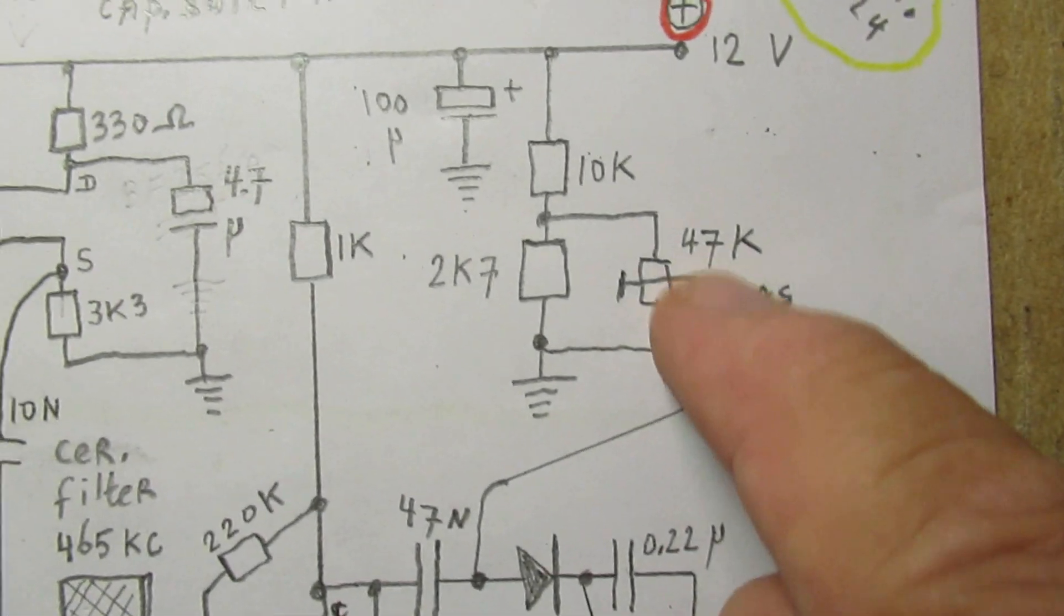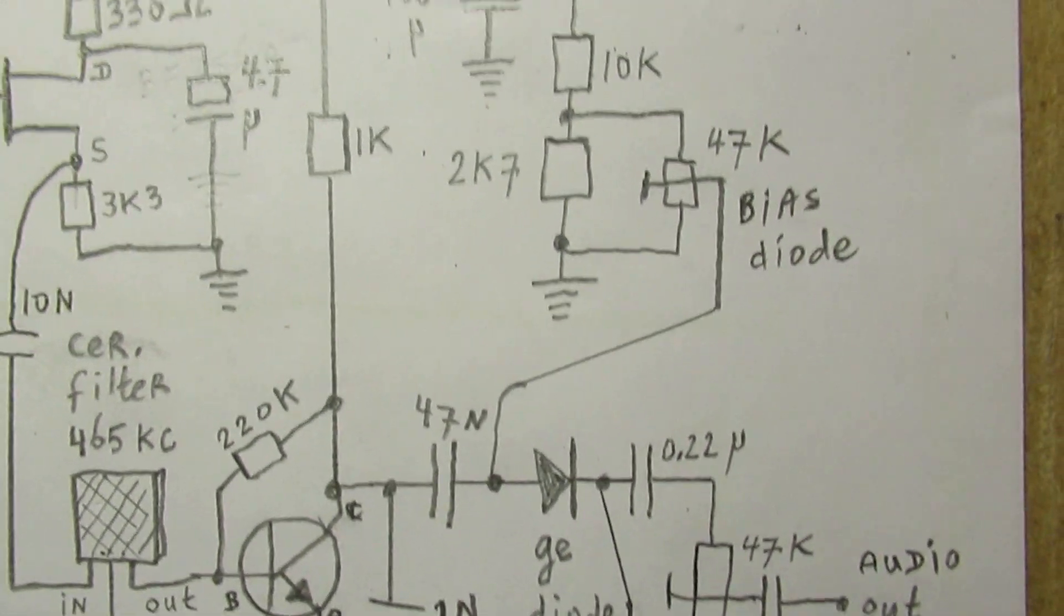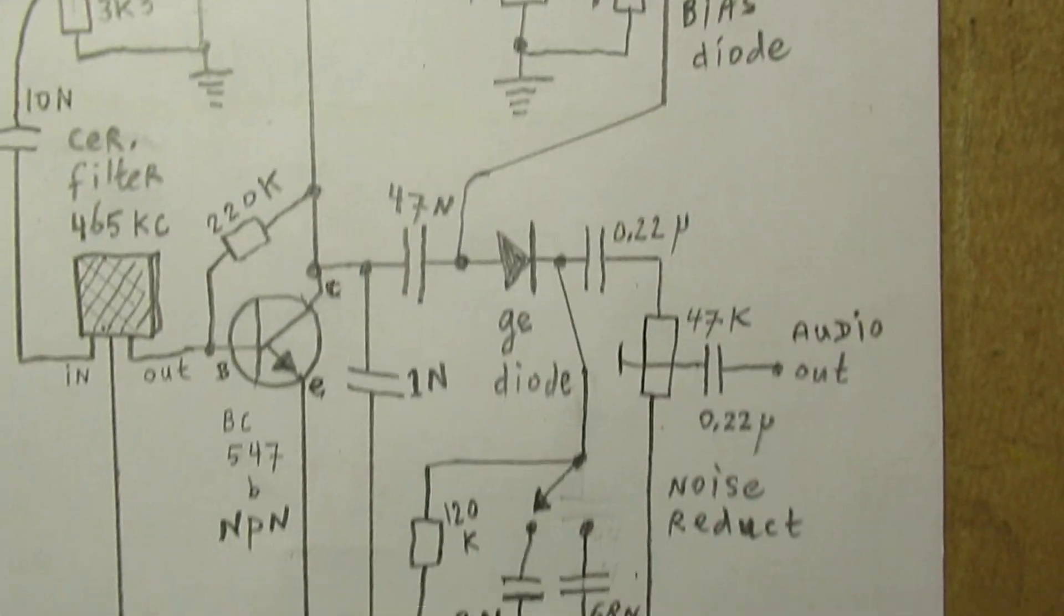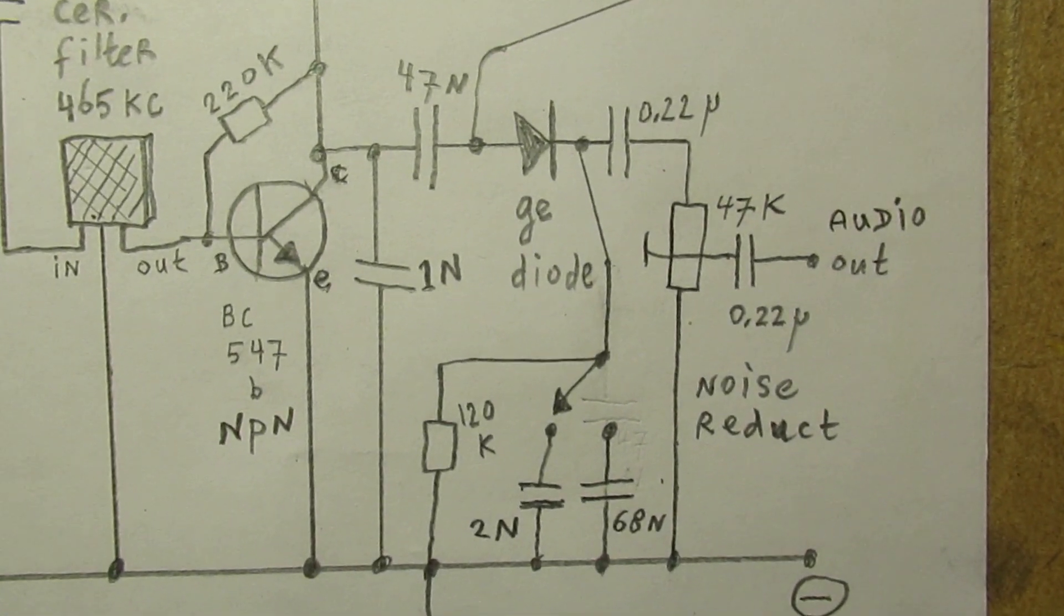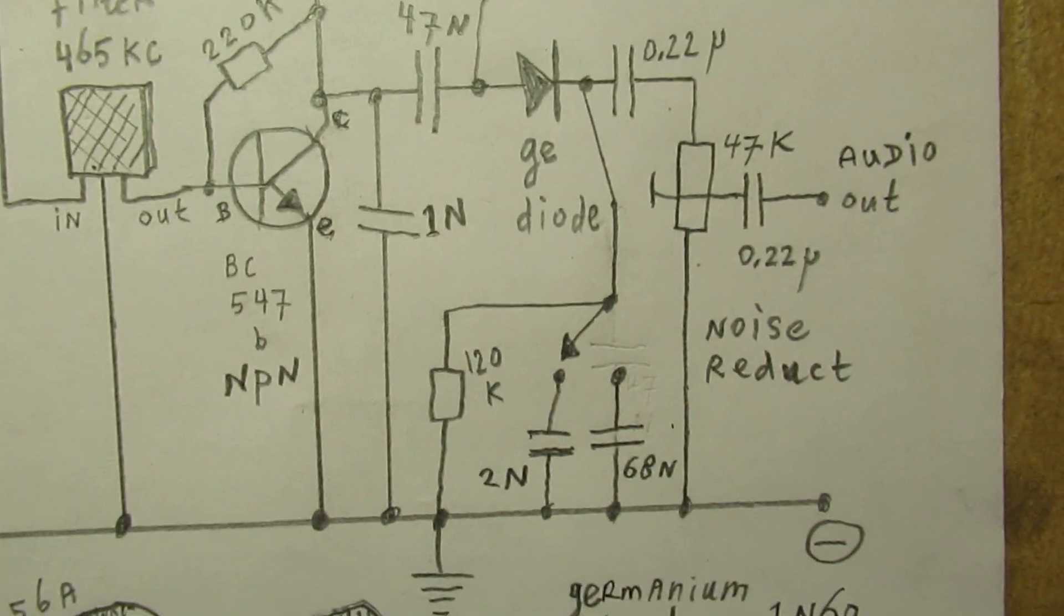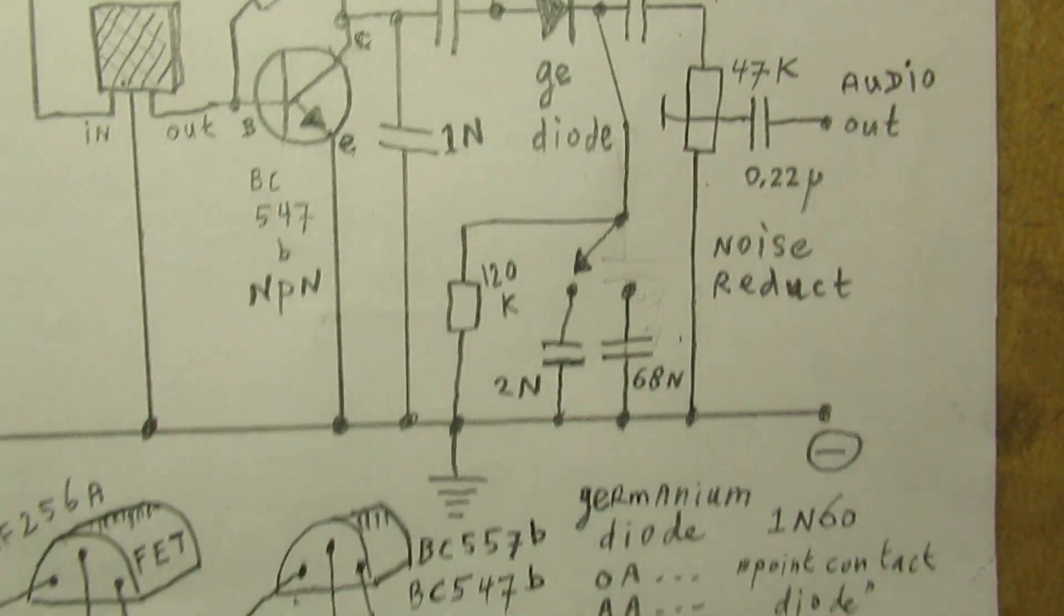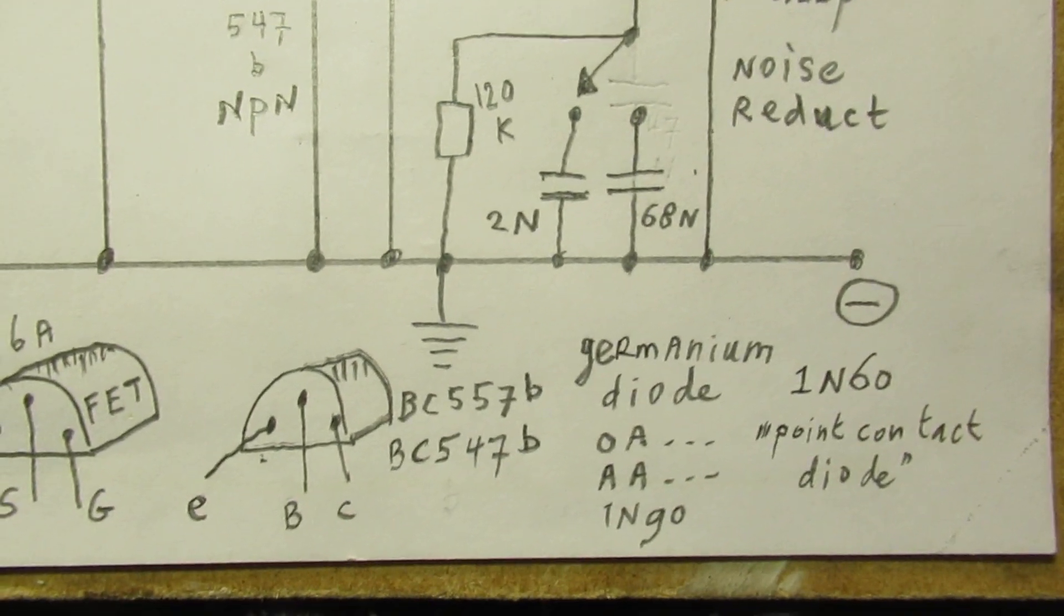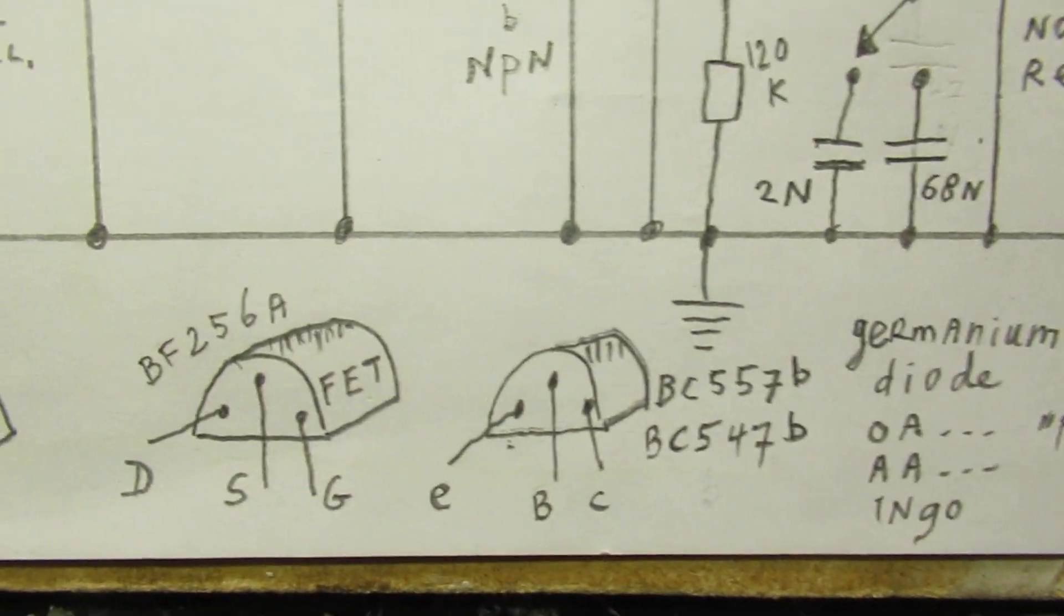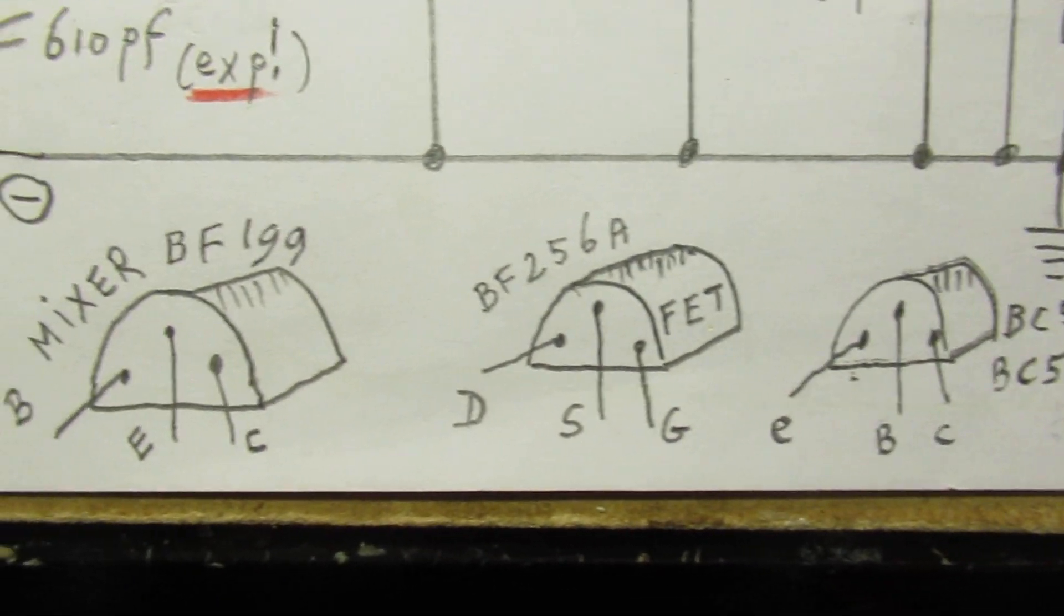And here we have a potentiometer with which we can give the diode a little bit of bias. This switch has to do with the noise reduction. And here are the pins of all these transistors.